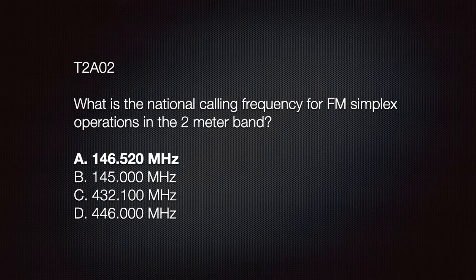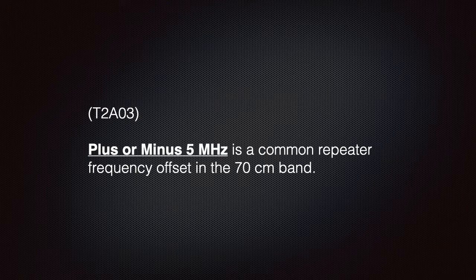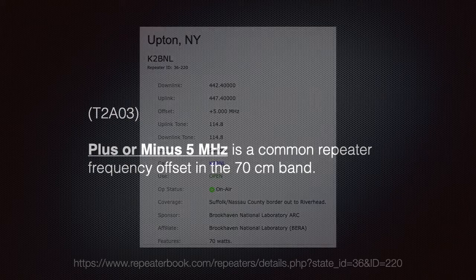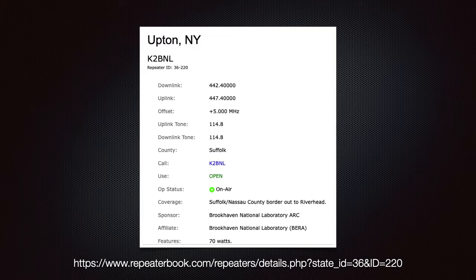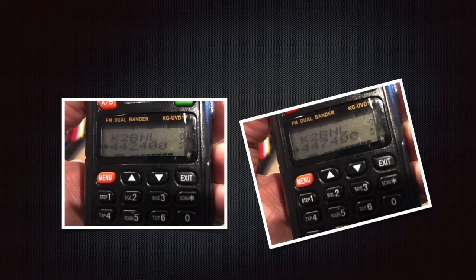We need to know that plus or minus 5 megahertz is a common repeater frequency offset in the 70 centimeter band. Offset information can be found online; sites like repeaterbook.com offer free information about repeaters around the country. This example shows the K2BNL repeater in Upton, New York, which uses a standard offset of 5 megahertz. The plus sign indicates the offset is added instead of subtracted; the polarity may help avoid interference with nearby repeaters.